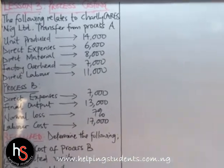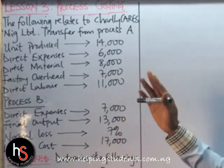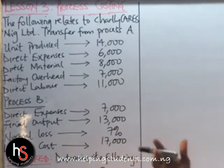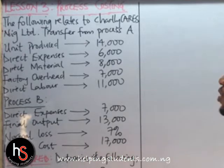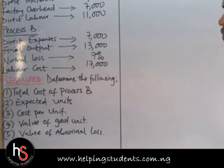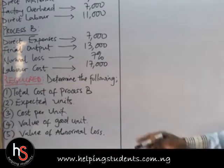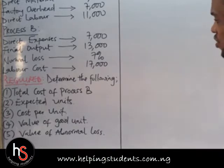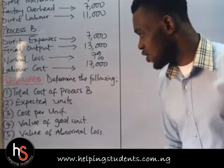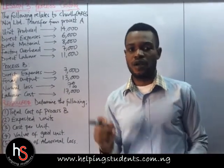The question says that the following relates to Charlie Care's Nigeria Limited, transfer from process A. Units produced, direct expenses, direct material, factory overhead, direct labor, and the values are given. For process B, we have direct expenses, final output, normal loss, and the labor cost required. Determine the following: the total cost of process B, expected units, cost per unit, value of good unit, and value of abnormal loss.